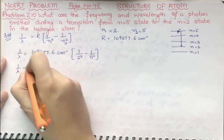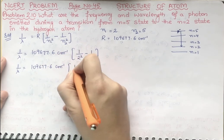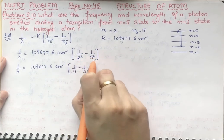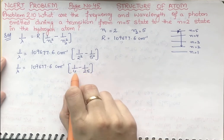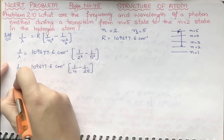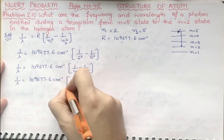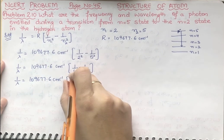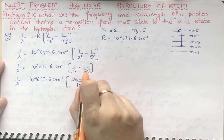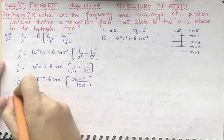Now let us take the LCM. We simplify: 1 by 4 minus 1 by 25. Since 2 times 2 is 4 and 5 times 5 is 25, we take the LCM. 4 times 25 equals 100. So: 100 divided by 4 is 25, and 25 times 1 is 25; 100 divided by 25 is 4, and 4 times 1 is 4. So 25 minus 4 equals 21.